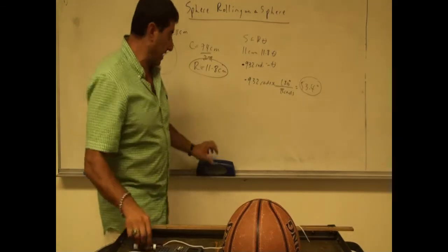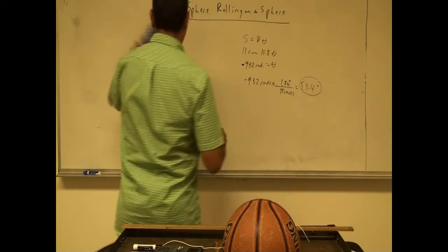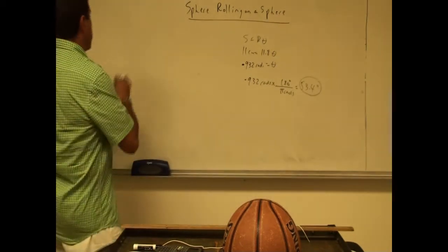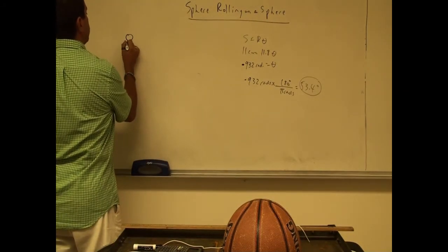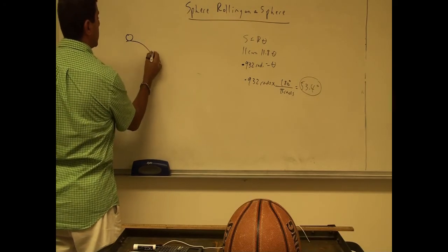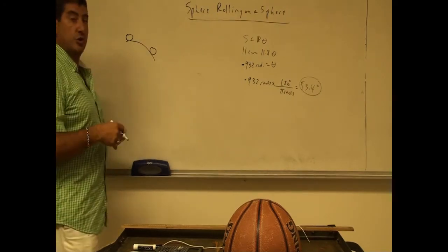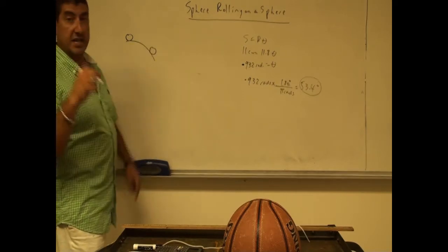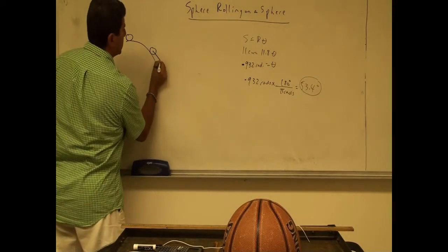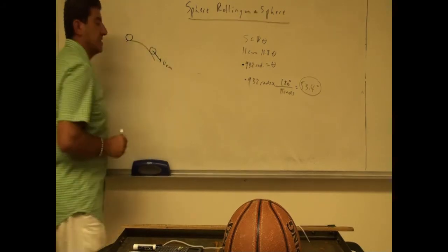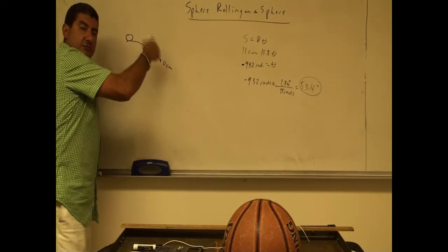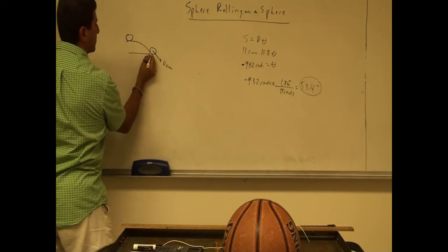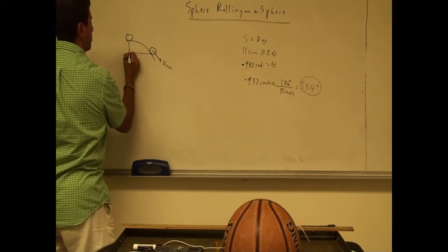Let's calculate the theoretical value. The theoretical is based on these calculations. When the ball starts out up here, it has a higher height, and when it goes lower, it gains two kinds of kinetic energy — tangential kinetic energy due to the velocity of the center of mass, and rotational kinetic energy. So the original height from the starting contact point to the leaving contact point — what is this equal to?